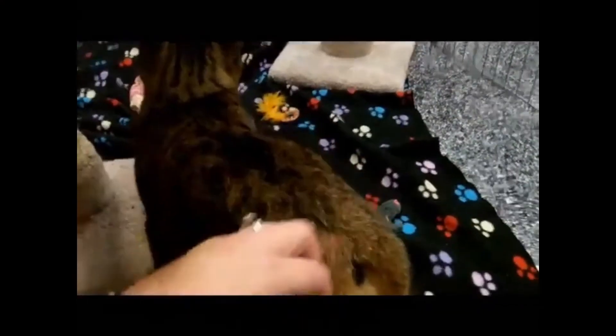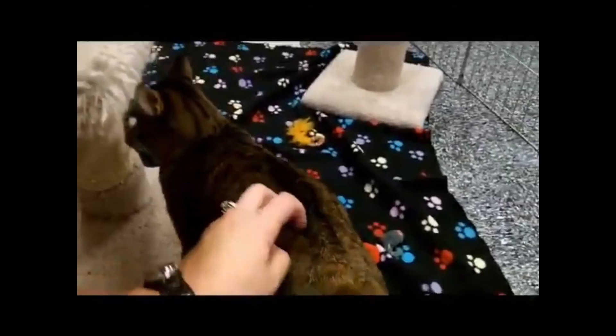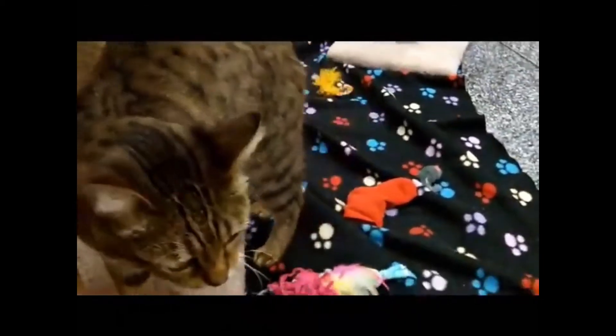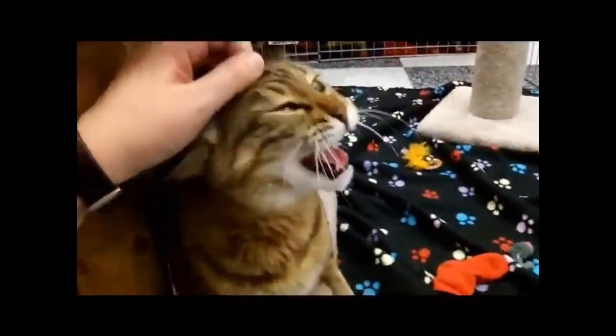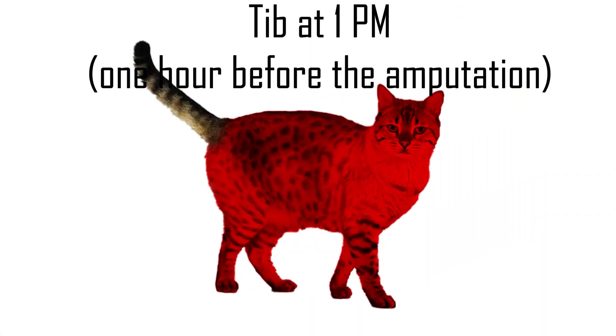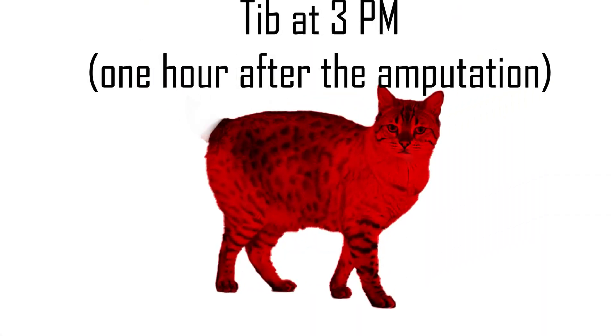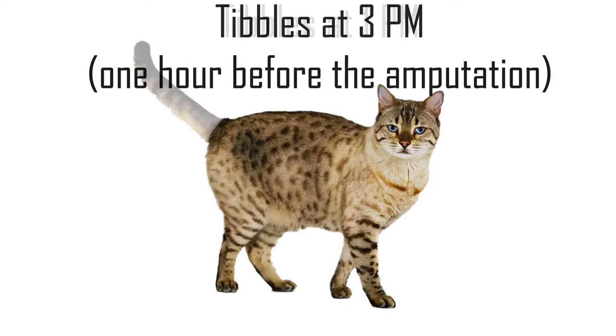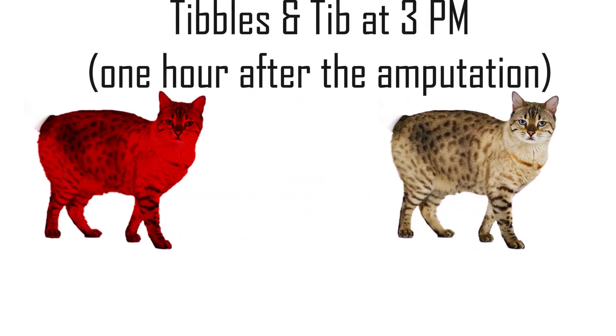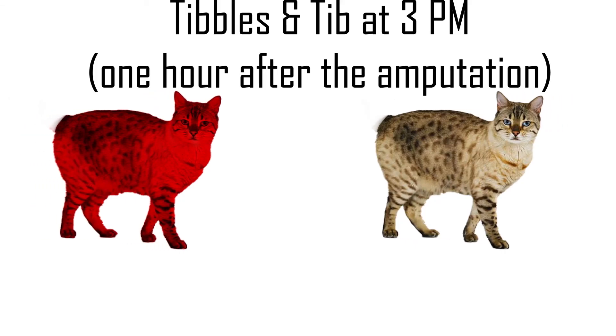So both Tibbles and Tib survived the amputation. Fast forward to 3 pm, one hour after the operation. Tibbles is lying on the couch, recovering. Where is Tib? It seems that Tib is in the exact same place as Tibbles. Tibbles is the same size it was before the amputation minus the tail, and Tib has shrunk and come to occupy the exact same place as Tibbles. So we have two objects located at the same place at the same time.